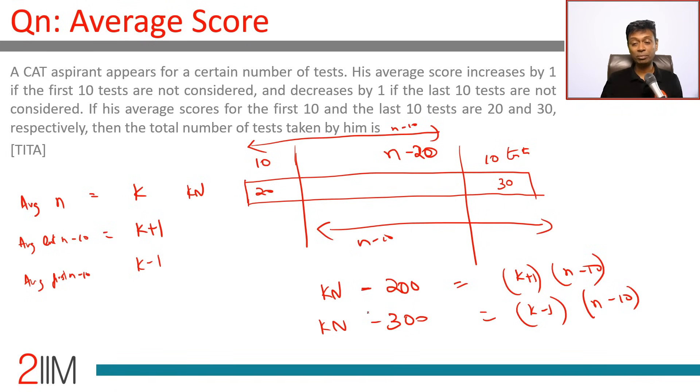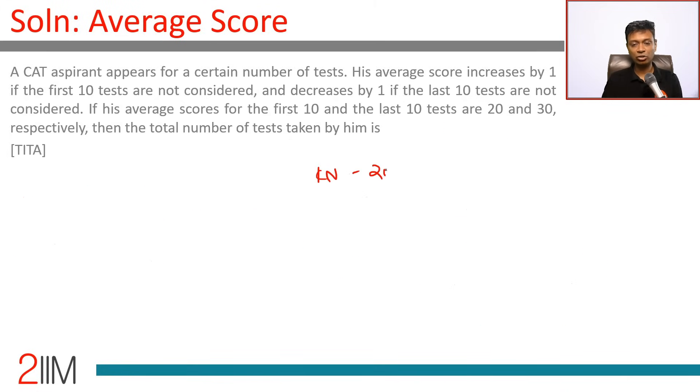I am doing this algebraically. If you subtract one from the other, bunch of terms will disappear. I am going to aim to do that. I am going to write this equation again. Kn minus 200 is k plus 1 into n minus 10.